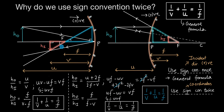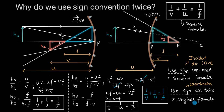For the concave mirror case, the object, image, and focus are all on the left-hand side of the pole P. Everything is negative. The negative signs cancel, and you use the same original equation. So we use sign convention the second time so that we go back to the original formula appropriate for each case.